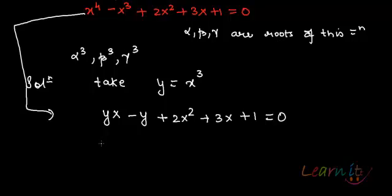Taking x common, x becomes y + 3 + 2x and I can take 1 and y out here. So this will be y - 1.